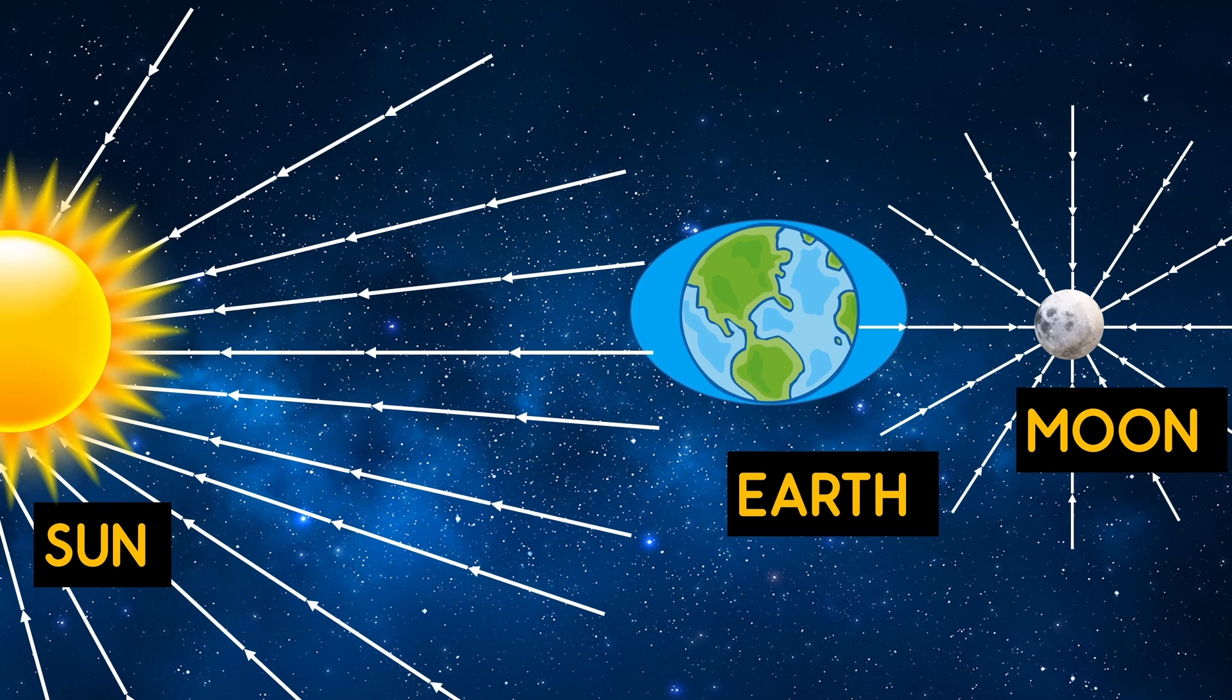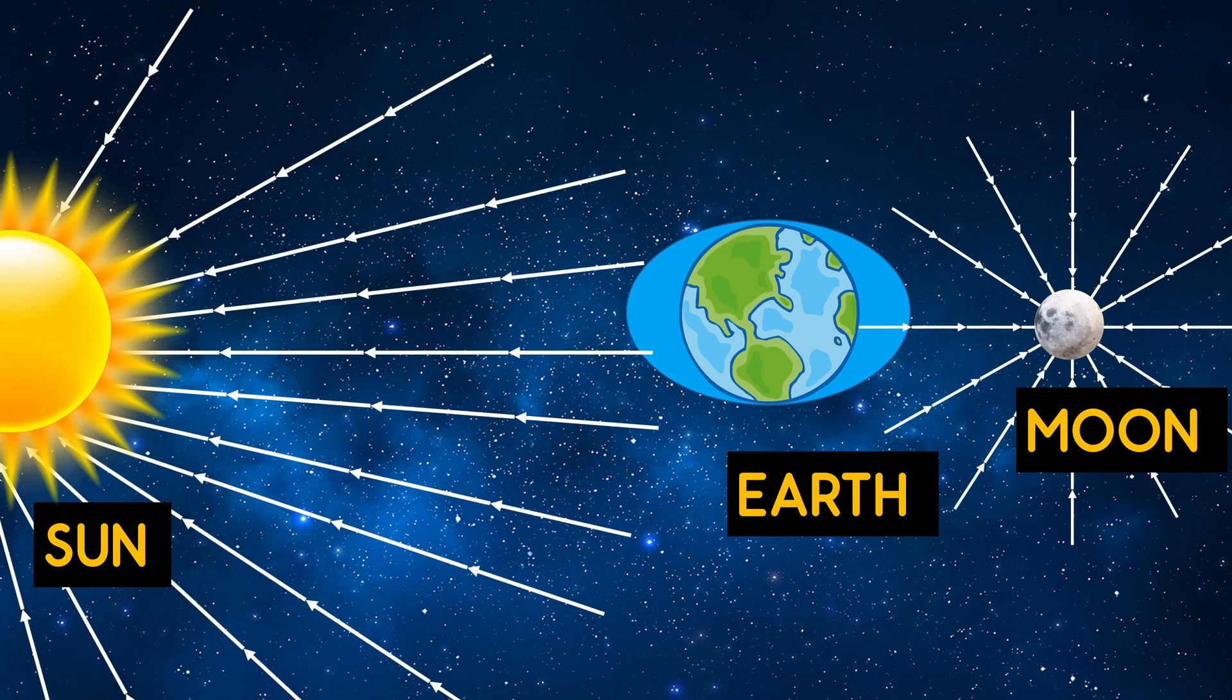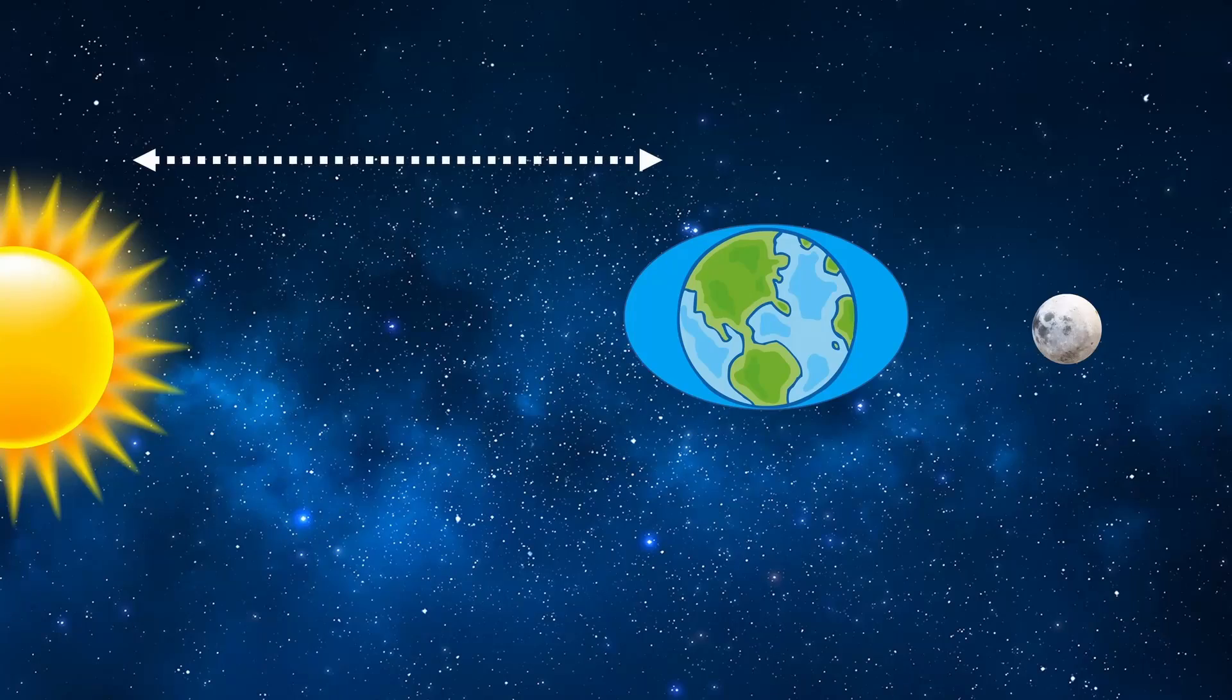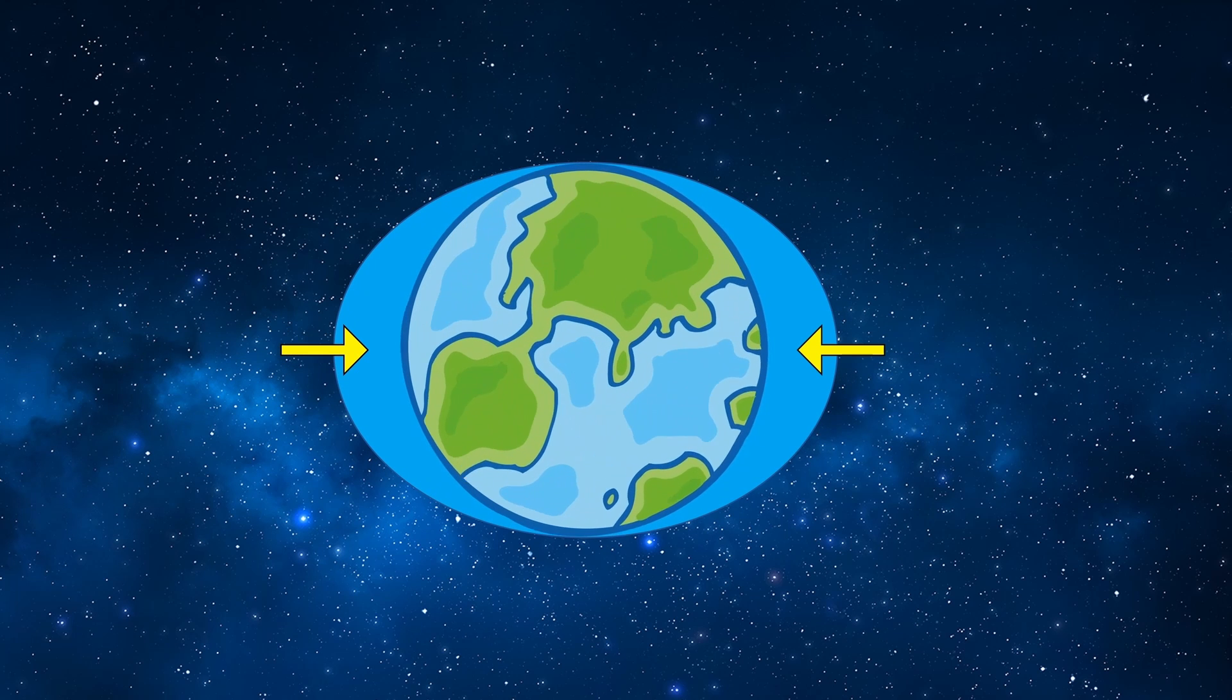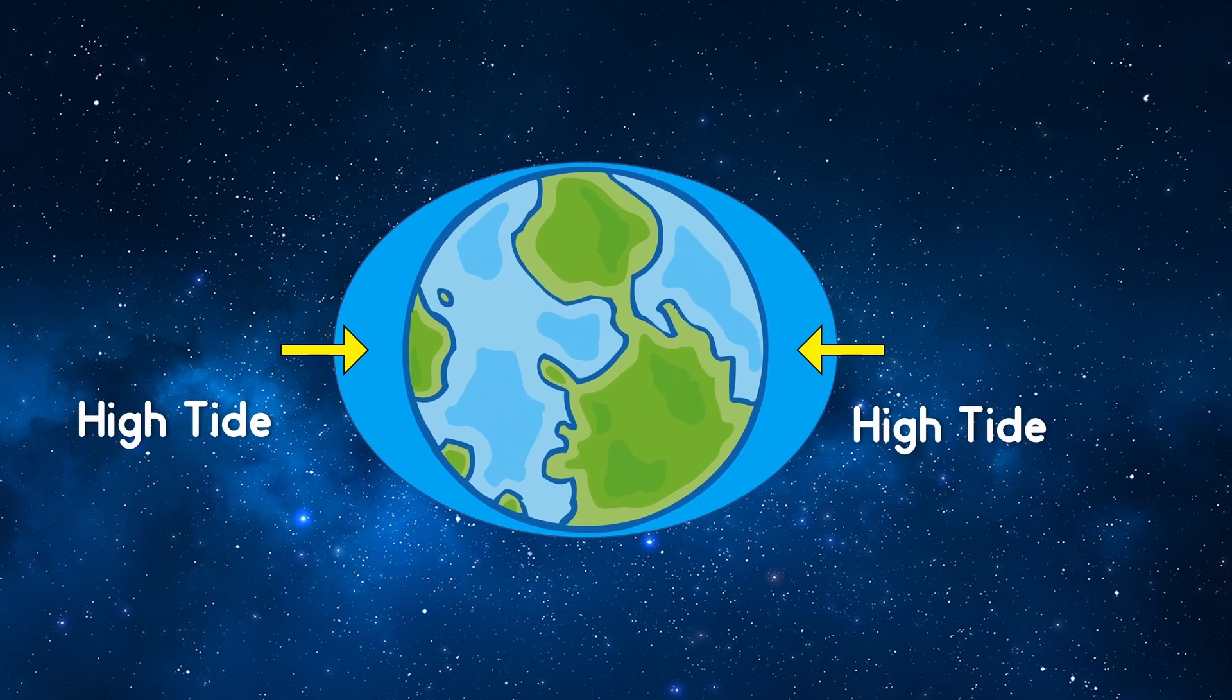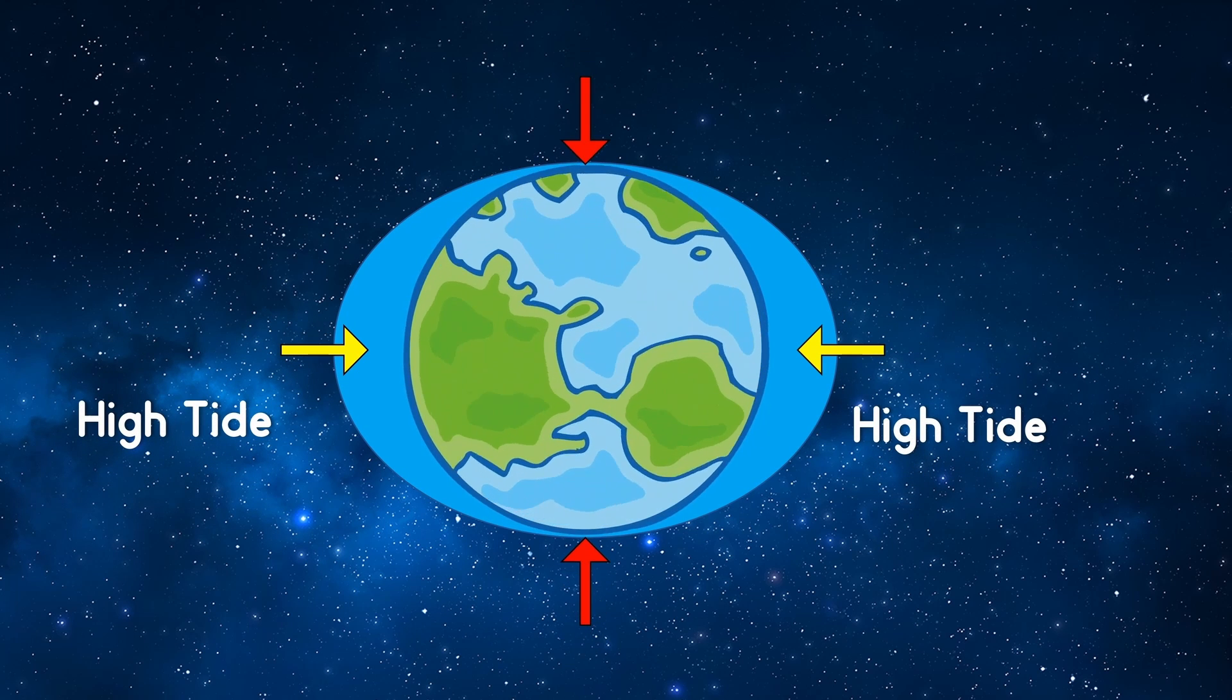In addition to this, the earth also experiences a gravitational force from the sun. But the effect of the sun's gravity is less compared to the moon because the sun is far away from the earth. When we are in one of these bulges, we experience high tide, and in the other region, we experience low tide.